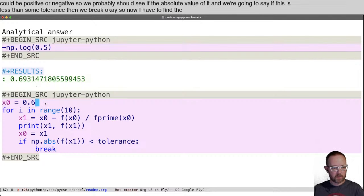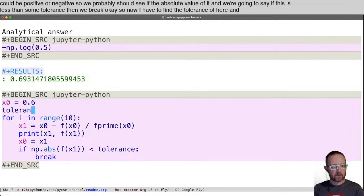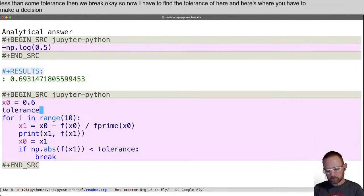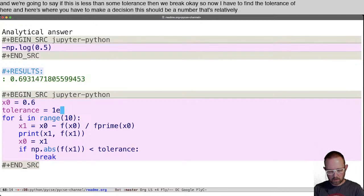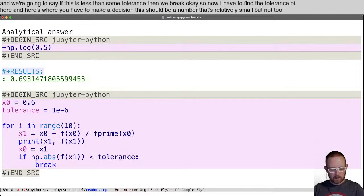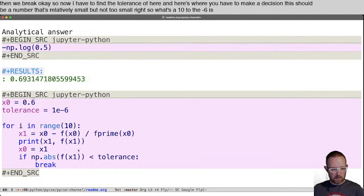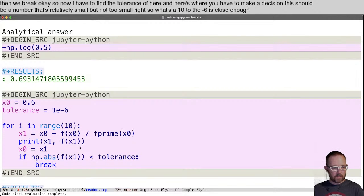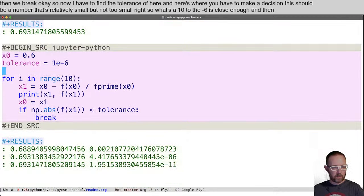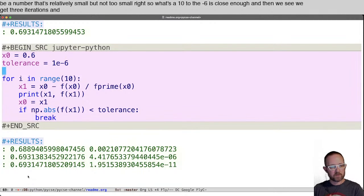Okay, so now I have to define the tolerance up here. And here's where you have to make a decision. This should be a number that's relatively small, but not too small. All right, so let's say 10 to the minus 6 is close enough. And then we see we get three iterations and we get to the answer.